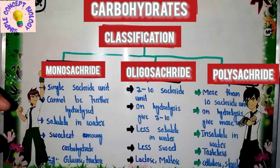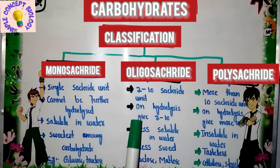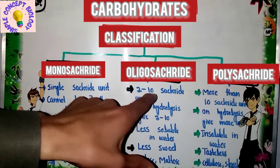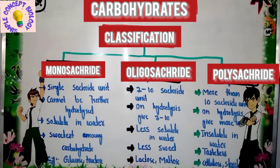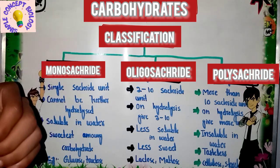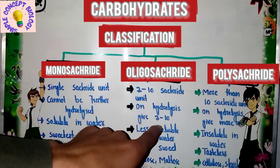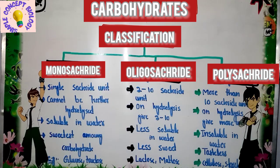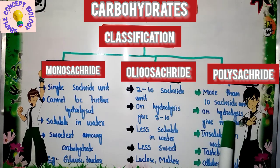Monosaccharide gives one single saccharide unit on hydrolysis. The second category, oligosaccharide, gives 2 to 10 saccharide units on hydrolysis. For polysaccharide, on hydrolysis you get more than 10 saccharide units.